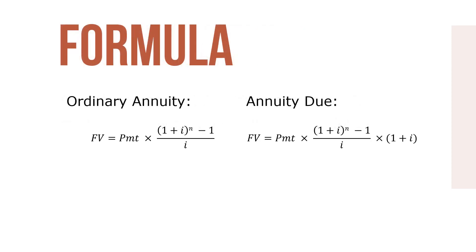Students with financial, business, or scientific calculators may be able to use the following formulas to solve for the future value of an ordinary annuity and the future value of an annuity due. Where FV equals future value, PMT equals annuity payment, I equals interest rate per period (nominal rate divided by periods per year), and N equals the number of periods (years times periods per year).